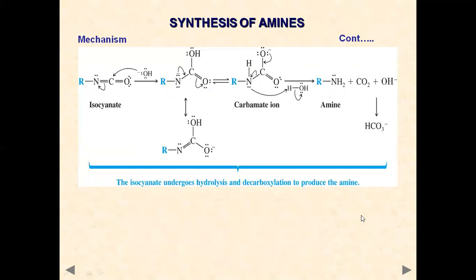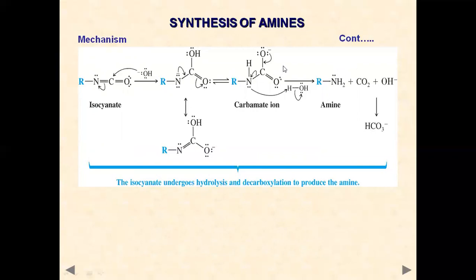In the final step, upon hydrolysis, OH attacks the isocyanate carbon center and the pi bond electron shifts onto nitrogen to give a carbamic acid intermediate. This tautomerizes to a carbamic acid; proton shifts occur and the carbamate ion undergoes decarboxylation, ultimately giving the primary amine and CO2. This is how we can synthesize primary amines from amides via Hofmann rearrangement.